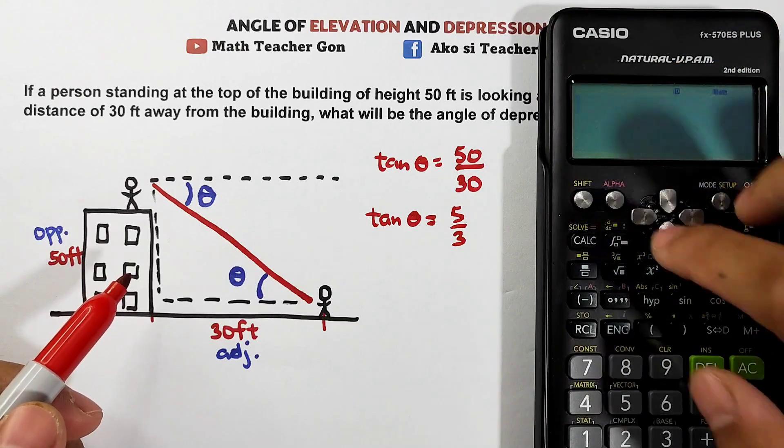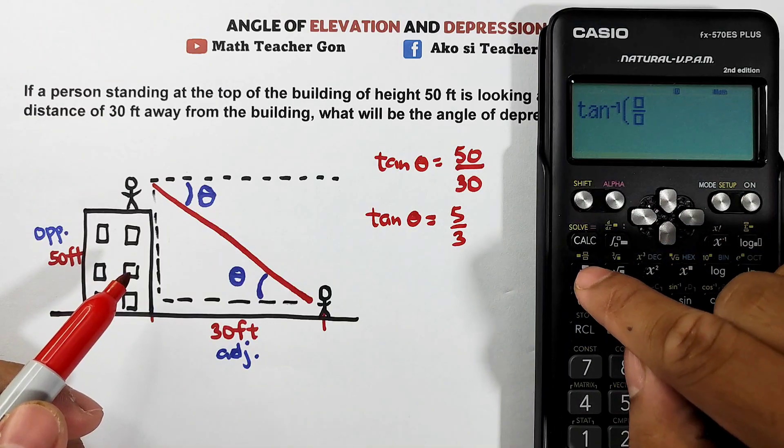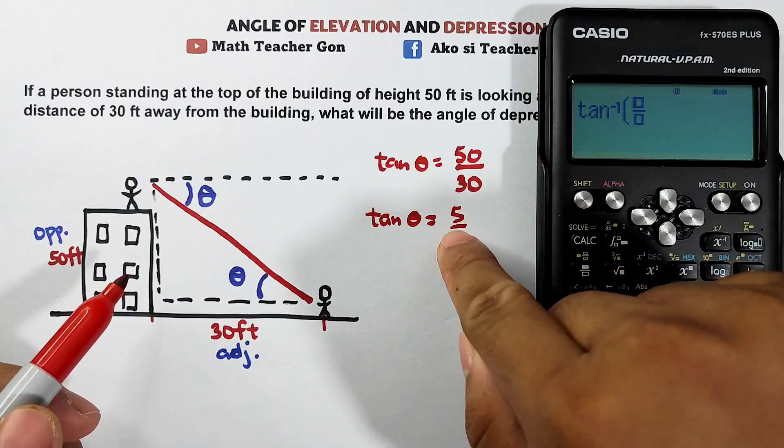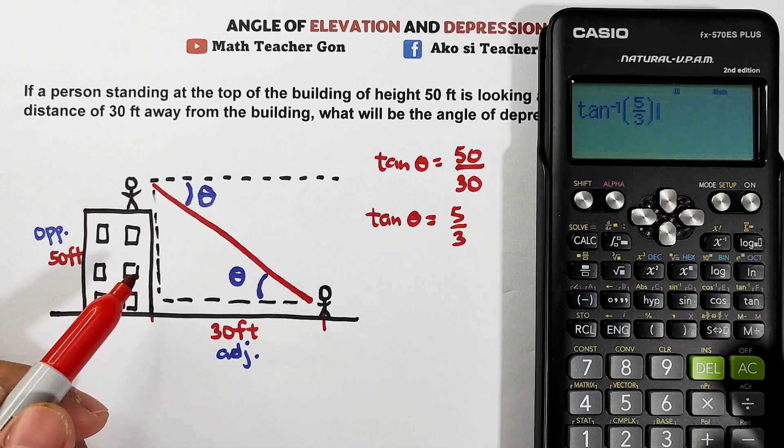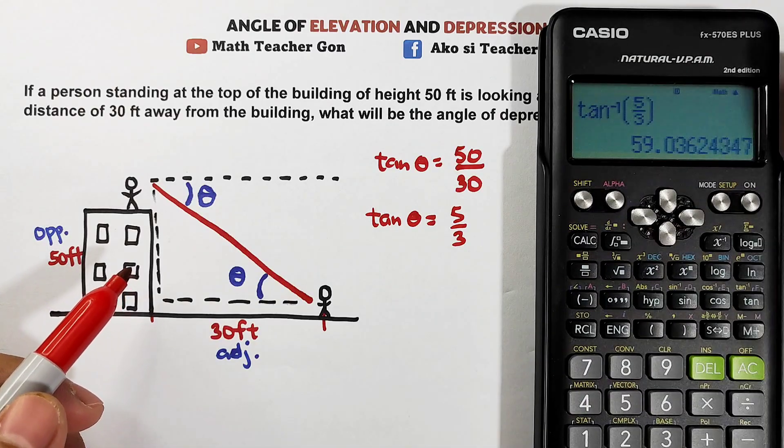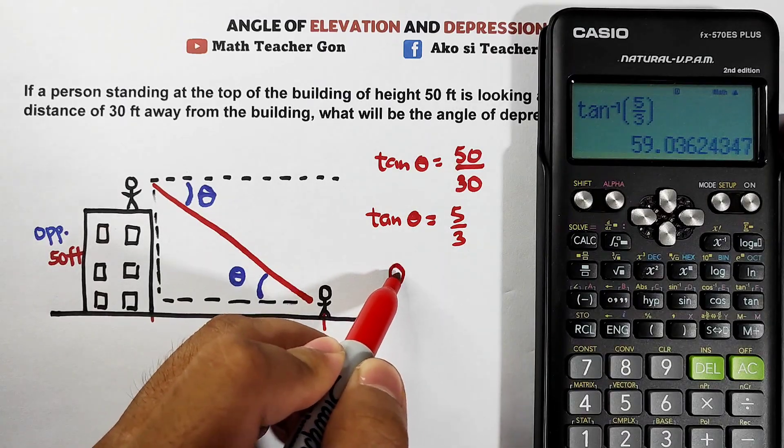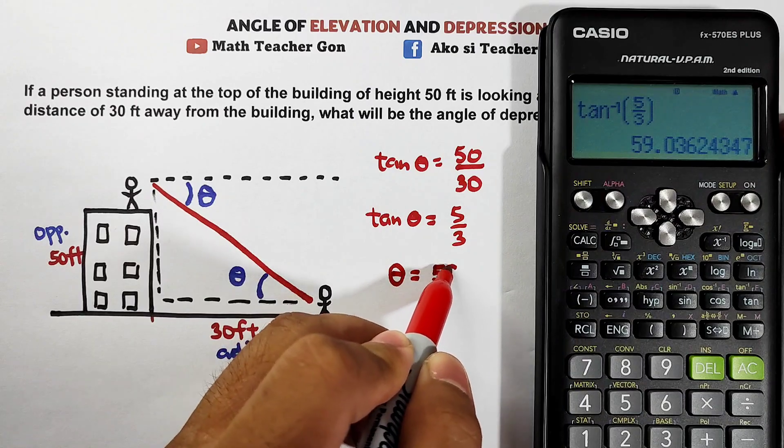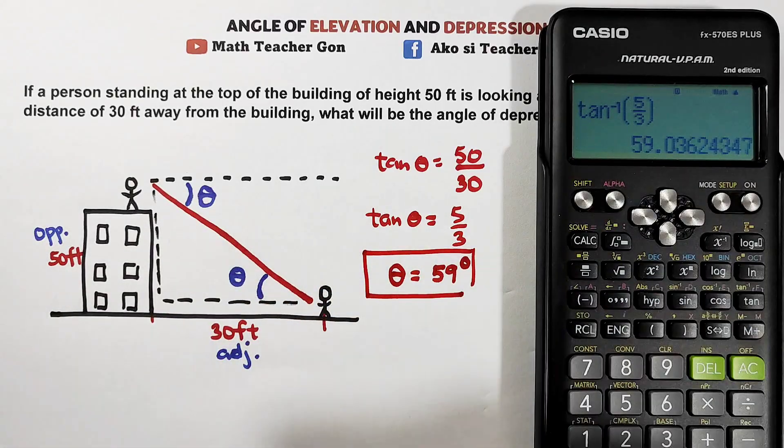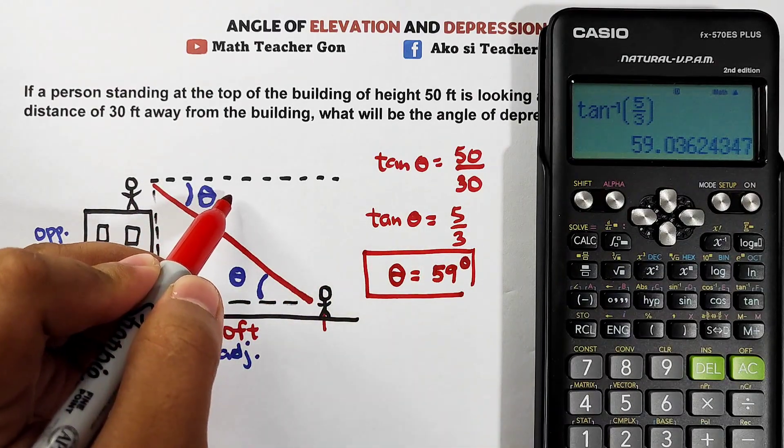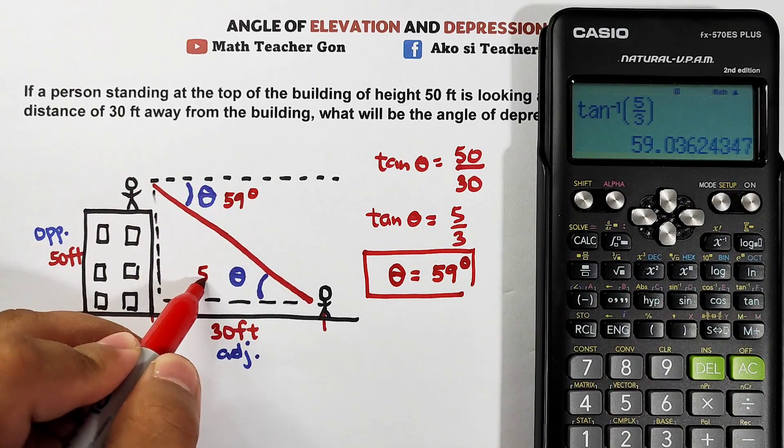Shift tangent, then get this fraction. You can input 50 over 30 or 5 over 3. So we have 5 over 3. Let's get the answer. So what we have now is the answer. That's automatic guys. I just skipped a step. Theta equals 59.03 degrees. We can make this 59 degrees. And this is the final answer guys. The angle of depression is 59 degrees.